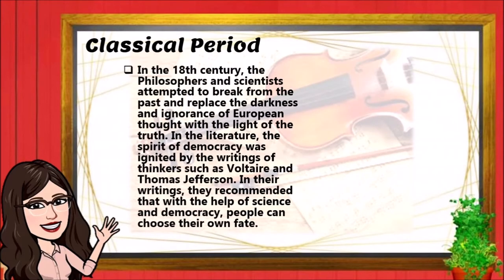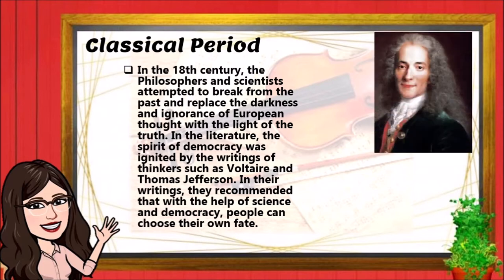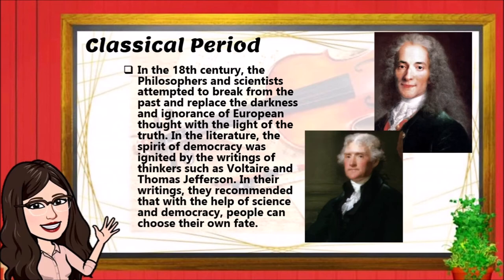In the 18th century, philosophers and scientists attempted to break from the past and replace the darkness and ignorance of European thought with the light of truth. In literature, the spirit of democracy was ignited by the writings of thinkers such as Voltaire and Thomas Jefferson. In their writings, they recommended that with the help of science and democracy, people can choose their own fate.